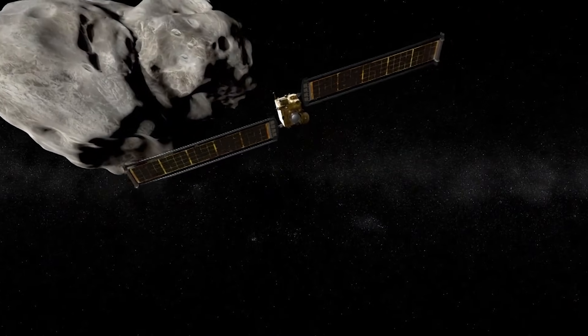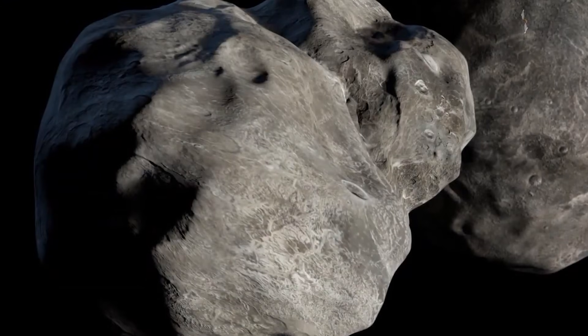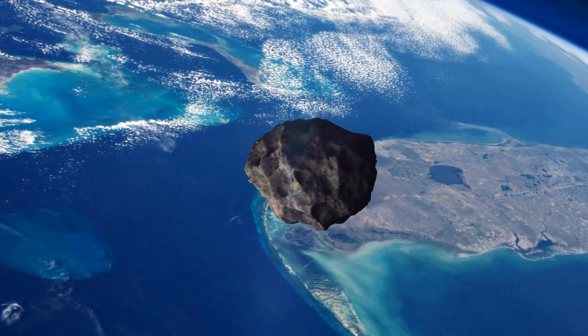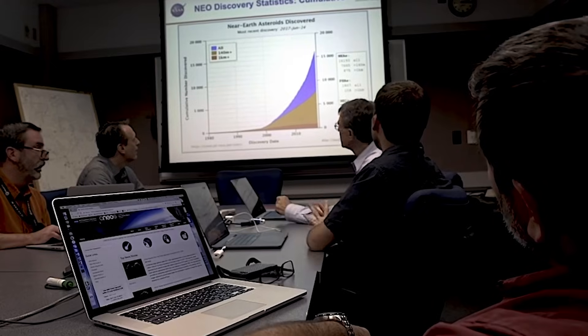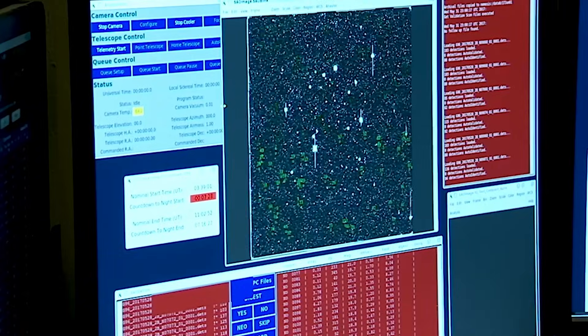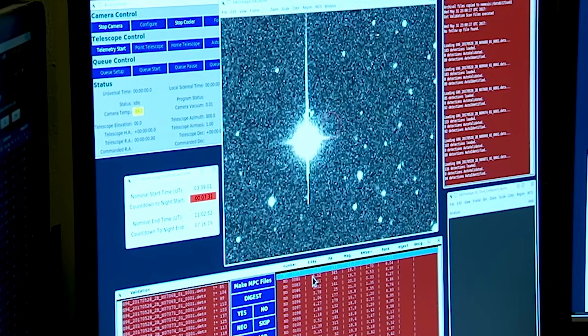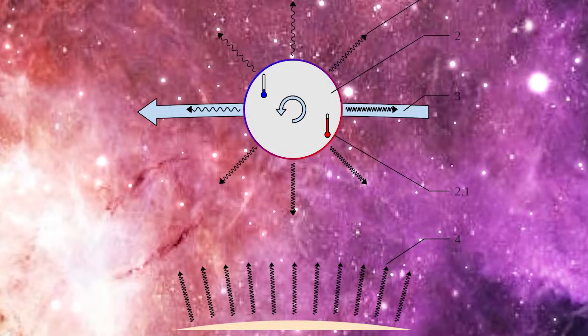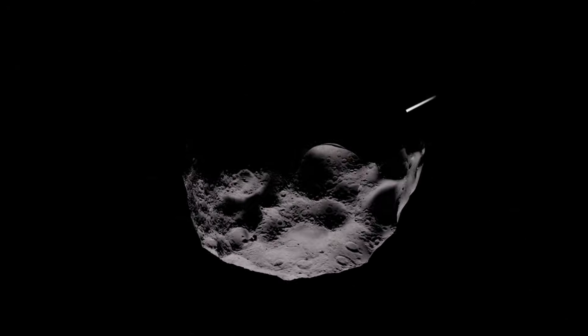Now imagine what would happen if this asteroid suffered a slight deviation in its path, just a few degrees, a subtle variation that would bring it directly to meet us. Every second, scientists around the world are monitoring its orbit. But there's something disturbing about this story. There's a phenomenon that might be acting against us, something subtle but terribly effective: the Yarkovsky effect. And what would that be, you ask? The answer might be even stranger than you imagine.